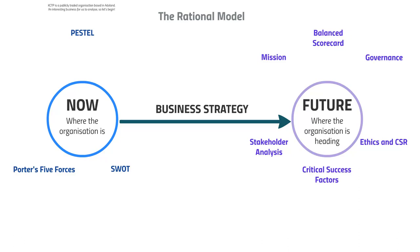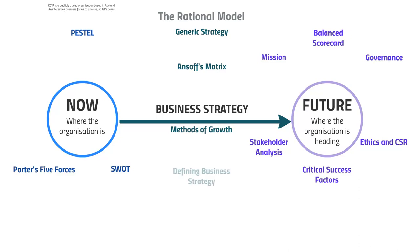For the final part of the video we'll look at the business strategy — where it fits within Porter's generic strategies, potential strategic options using Ansoff's matrix, how it's going to grow once it's decided upon a method of growth, and defining the current strategy of the organization: what it should keep and what it should do going forward.